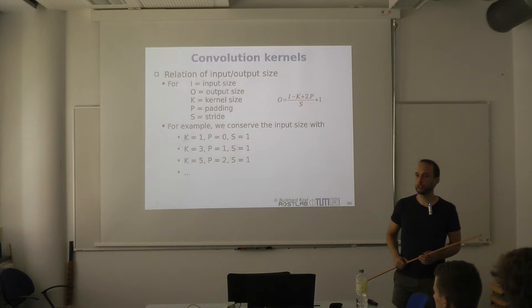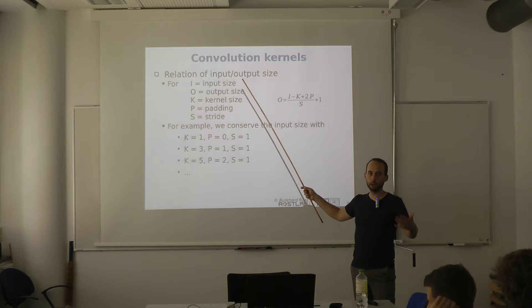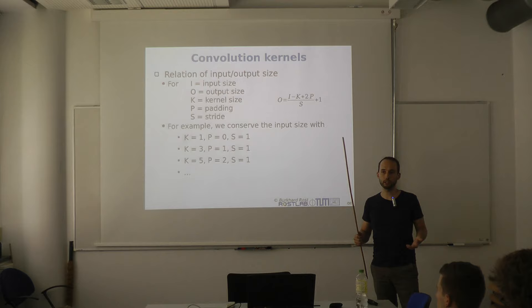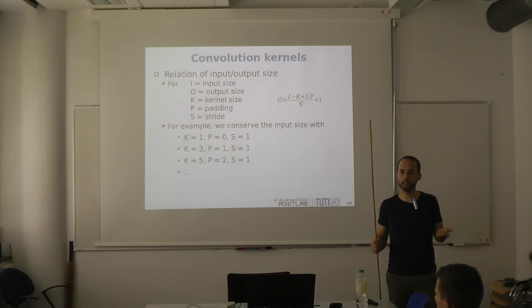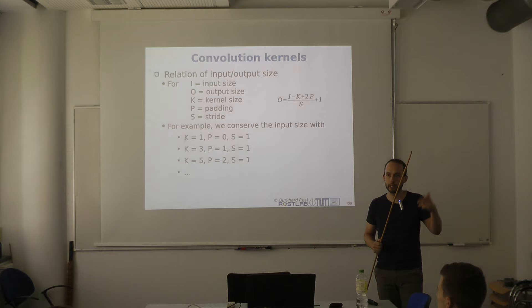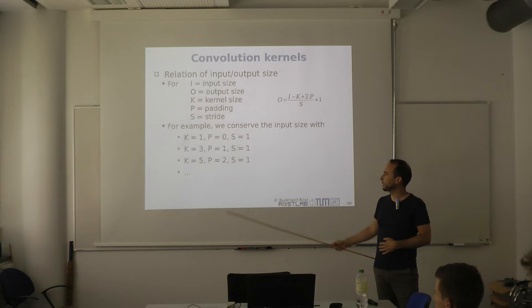There's a neat formula to relate input and output sizes. Often you want to conserve the input size — in our case this is important because we have L times L as input and want to produce L times L as output. L can be any arbitrary number like 237 residues, and we don't want to down- and up-sample because that causes problems. If you have a five-by-five kernel, you need a padding of two to keep the size the same.